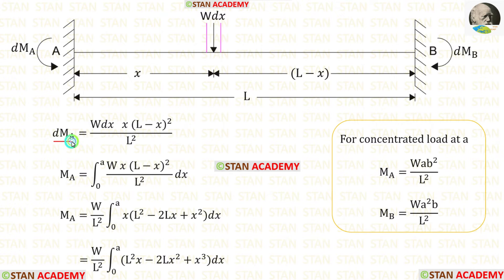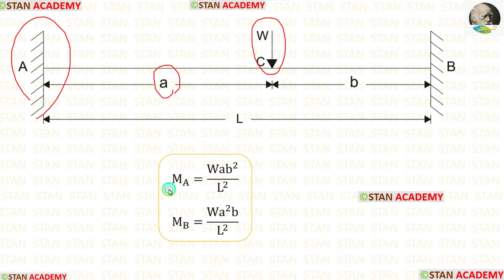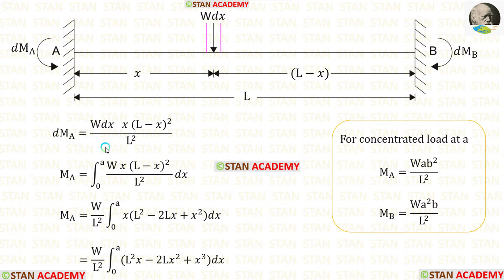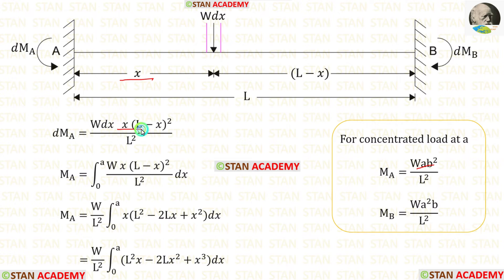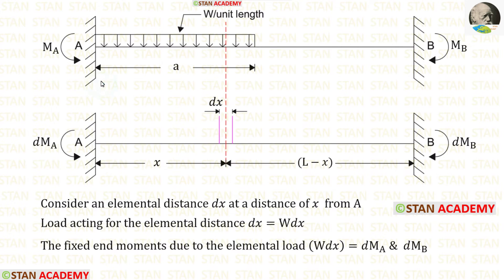Now let us form DMA. In the previous video we derived the fixed end moments due to a point load W acting at a distance of A from the left side. For MA the formula is WAB²/L². We can use the same formula — here the load is W·dx, so instead of W we apply W·dx, A is replaced by x, and B is replaced by L minus x. To find MA we have to integrate, with limits 0 to A, because the UDL is acting from 0 to A.